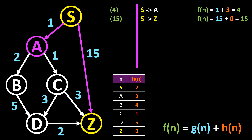Now it's time for the first decision. Which of the two routes to the destination is currently more favorable? The path from S to A, since 4 is less than 15. Although we could theoretically already be at our destination, the algorithm searches for a more favorable path. We set the path S to A to visited and the path S to Z to temp. Temp means we will look at this path again later, because it could be that there is no better route from S to Z than the direct route with the cost of 15.